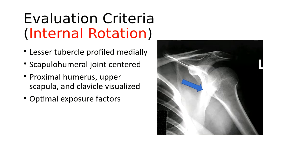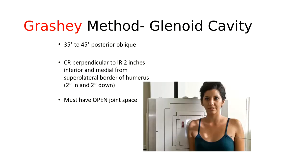After the external rotation and internal rotation, the next image is called the Grashey method, found on page 196. This demonstrates the glenoid cavity — it actually opens the scapulohumeral joint. That is the whole purpose of this view.